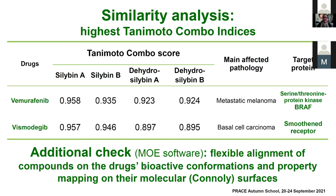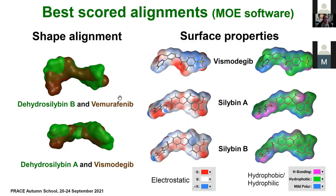The Tanimoto combo indices show two key drugs: vemurafenib, used for treatment of metastatic melanoma with target protein BRAF kinase, and vismodegib, used for treatment of basal cell carcinoma with target the mutant smoothened receptor. Before proceeding further, we performed an additional check using flexible alignment of compounds on the drugs by active conformations extracted from their 3D complexes, and mapped properties on Connelly surfaces. We found better shape correspondence for vismodegib and good correspondence in surface properties between vismodegib and celibins.